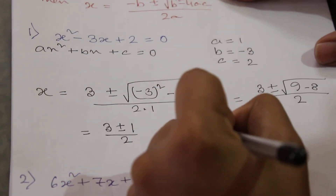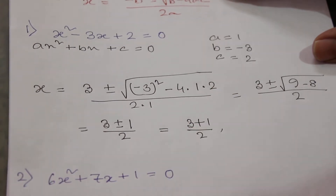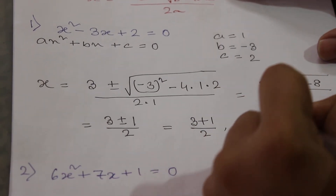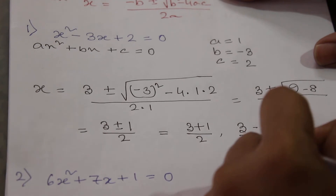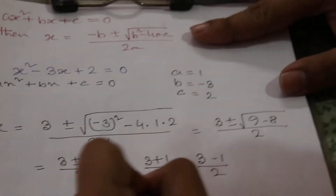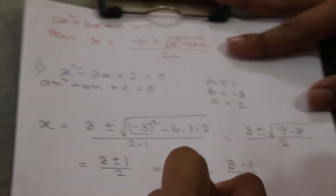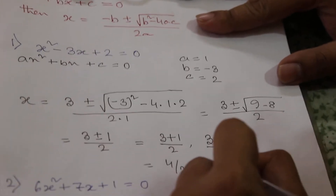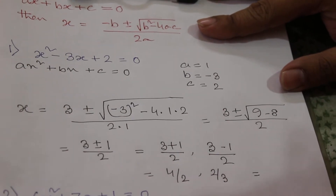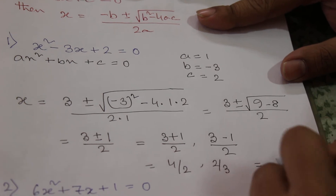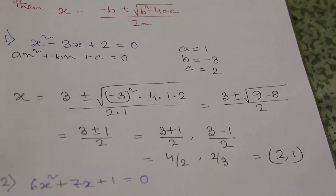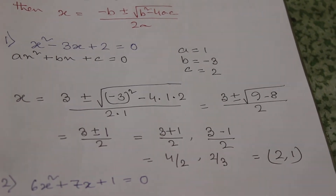One root will be equal to (3+1)/2 and another will be equal to (3−1)/2, as they have a plus-minus sign. So that gives us 4/2 and 2/2. The roots are 2 and 1 — these are the two roots of this quadratic equation.